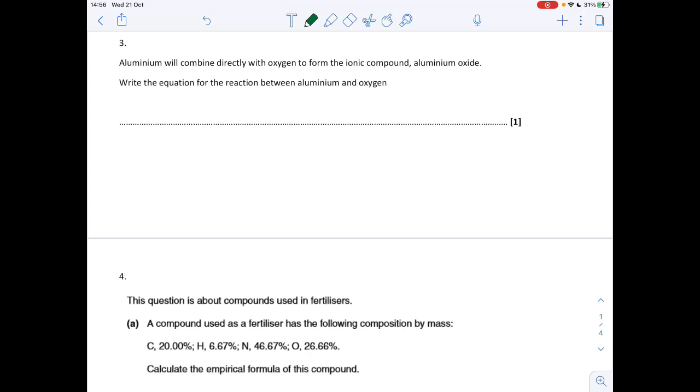Next question, we've got to write the equation for the reaction between aluminium and oxygen. We're not given any formulae so we're expected to know what these are. Aluminium oxide we're told is ionic. It contains the Al3+ ion and the O2- ion. So aluminium oxide is going to be Al2O3. That's the ratio of ions that makes the charges equal and opposite. So unbalanced equation first. Al plus O2 goes to Al2O3.